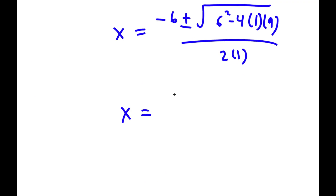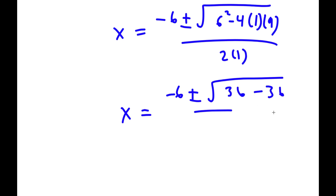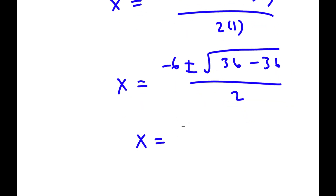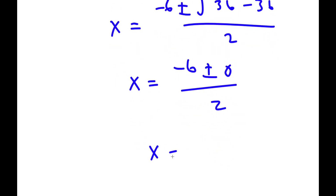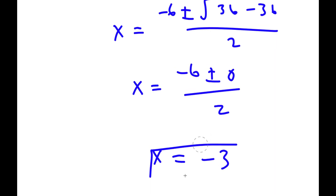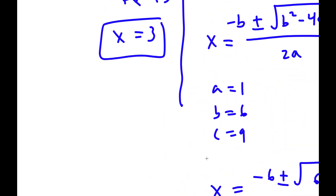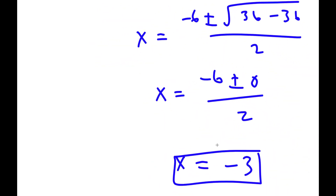Simplifying: I have negative 6 plus or minus the square root of 36 minus 36, all over 2. Since 36 minus 36 is 0 and the square root of 0 is 0, this becomes negative 6 over 2, which is negative 3. So my solutions are x equals 3 and x equals negative 3.